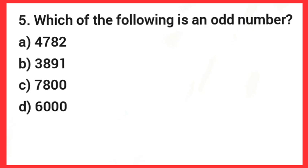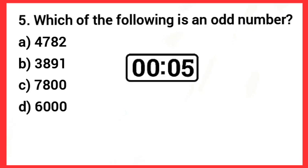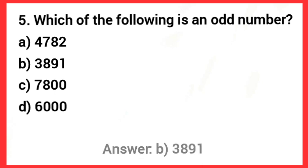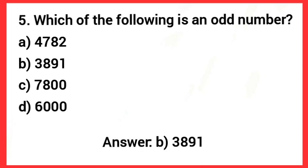Next one: Which of the following is an odd number? Answer: Option B — 3,891.